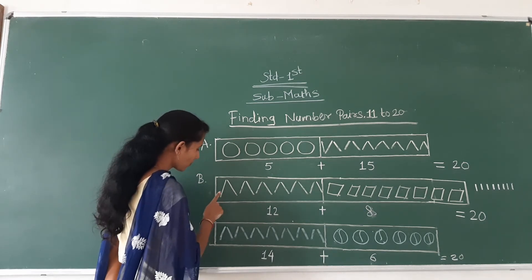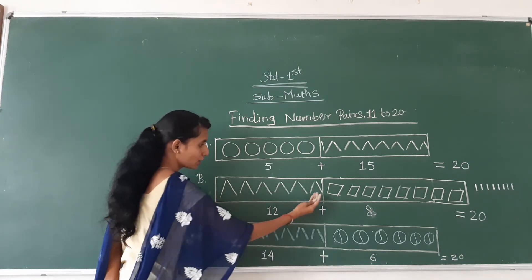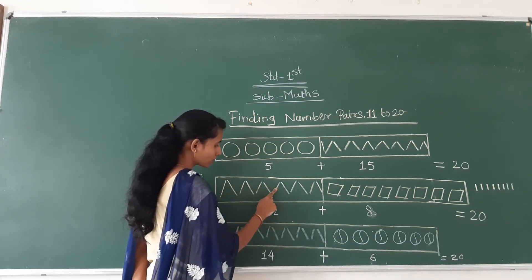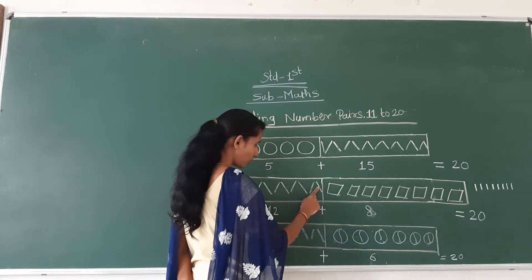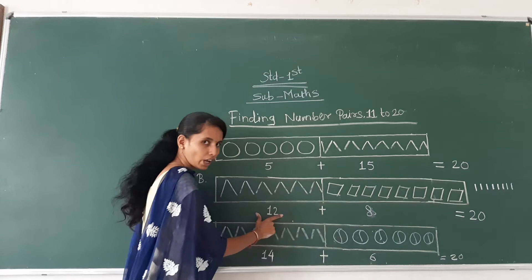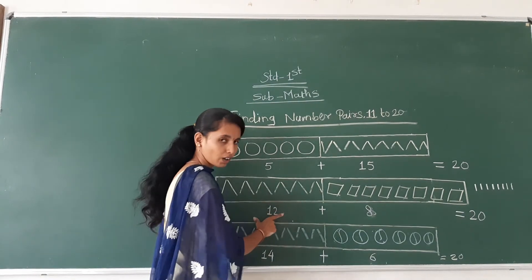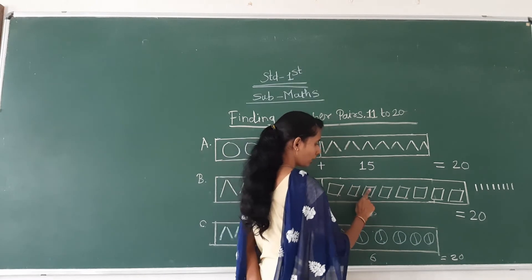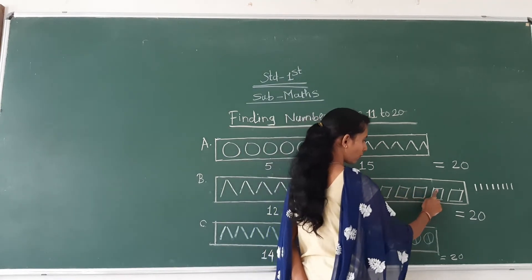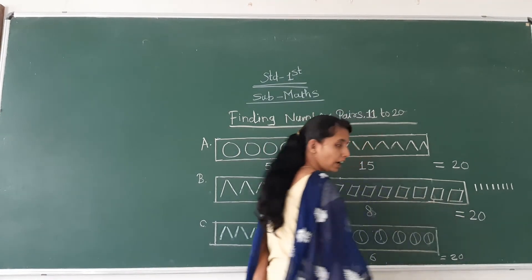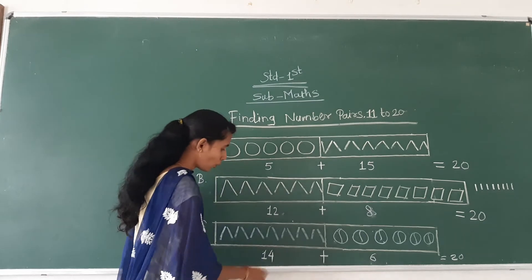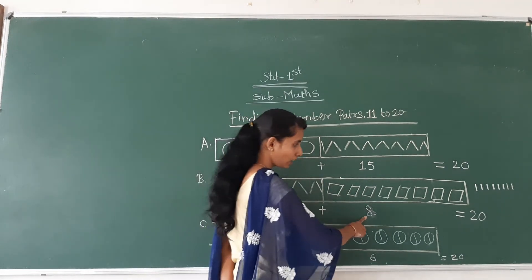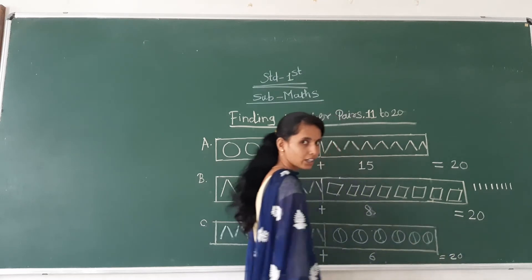Next example. How many lines here in this first row box? 1, 2, 3, 4, 5, 6, 7, 8, 9, 10, 11, 12 lines here. And how many boxes here? 1, 2, 3, 4, 5, 6, 7, 8. Eight boxes here. So 12 plus 8, how many counting? Final 20.